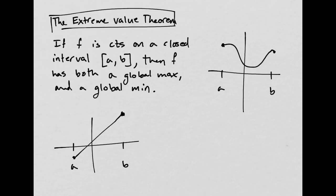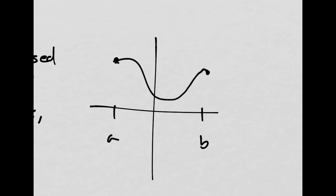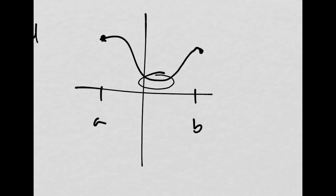So here, what this is saying is if you have no breaks, then there's definitely going to be a highest point and there's definitely going to be a lowest point because the interval is closed. So let's think about it for this case. Here, the global minimum would be somewhere down there at x equals some value, close to that.